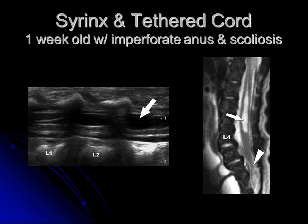This is a one-week-old with imperforate anus and scoliosis — again, a higher likelihood the test will be positive. This is a longitudinal ultrasound image of the spine at the levels of L1, L2, and the superior aspect of L3. You can see the spinal cord is in the spinal canal with distension of the central spinal canal that looks like a syrinx. This is confirmed on sagittal T2-weighted MRI of the lumbar spine, where the conus is really low — down at the S1-S2 disc space, marked by the arrowhead. The arrow points to the large syrinx in the distal spinal cord. This child has a tethered cord and syrinx.